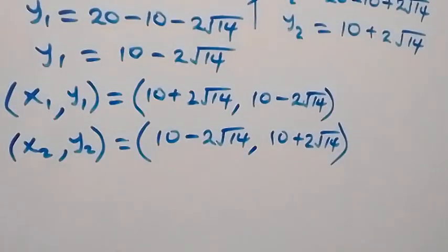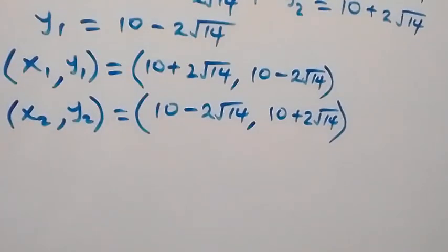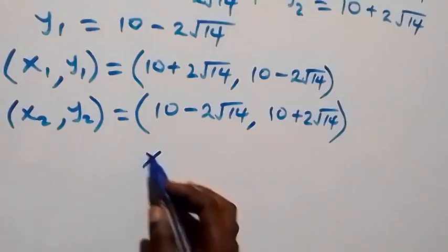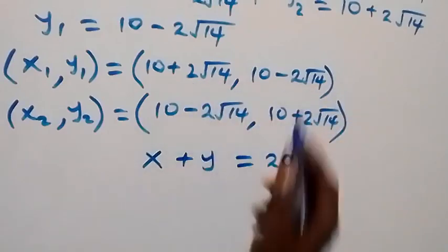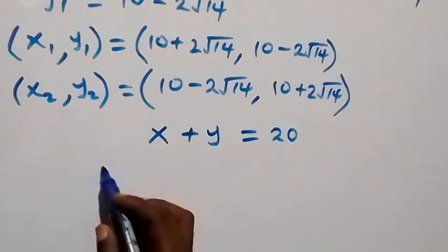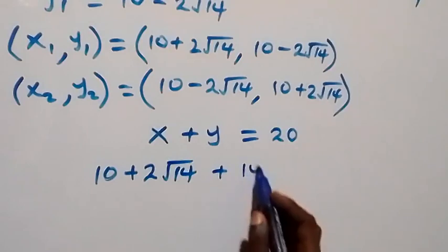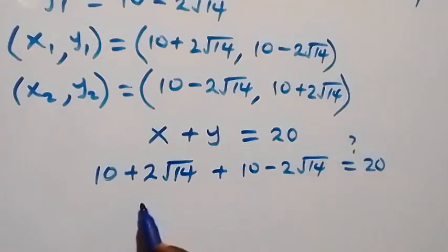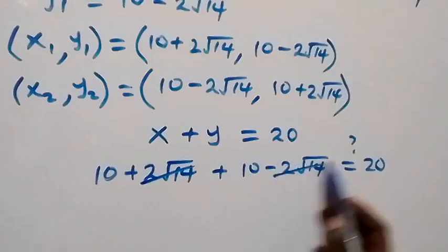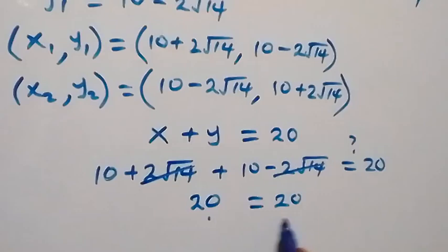We can see that x₁ equals y₂ and y₁ equals x₂. Let's verify against equation one: x plus y equals to 20. Using the first solution, x plus y becomes (10 plus 2 root 14) plus (10 minus 2 root 14). The 2 root 14 terms cancel, leaving 10 plus 10 equals 20, so left-hand side equals right-hand side. Equation one is satisfied.